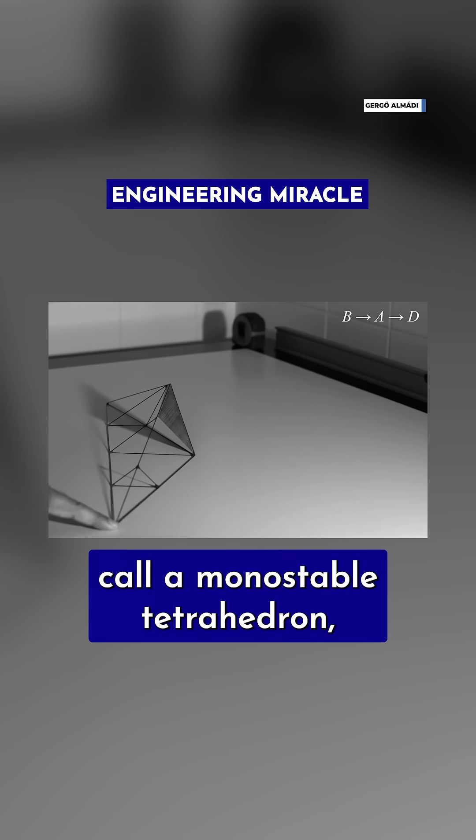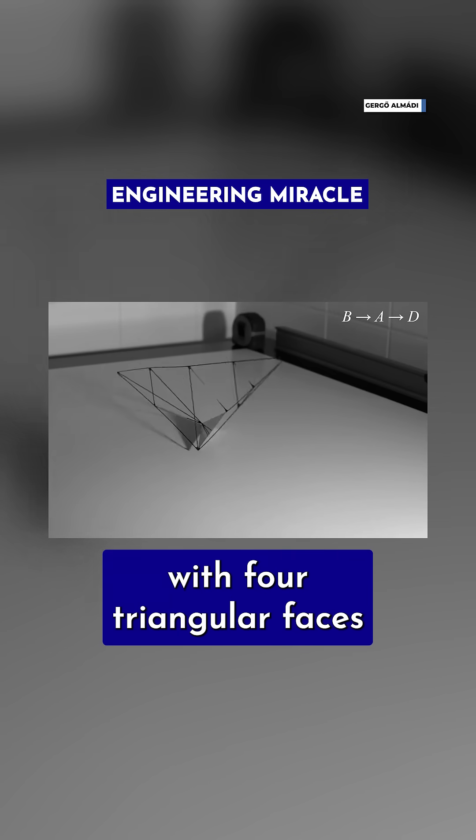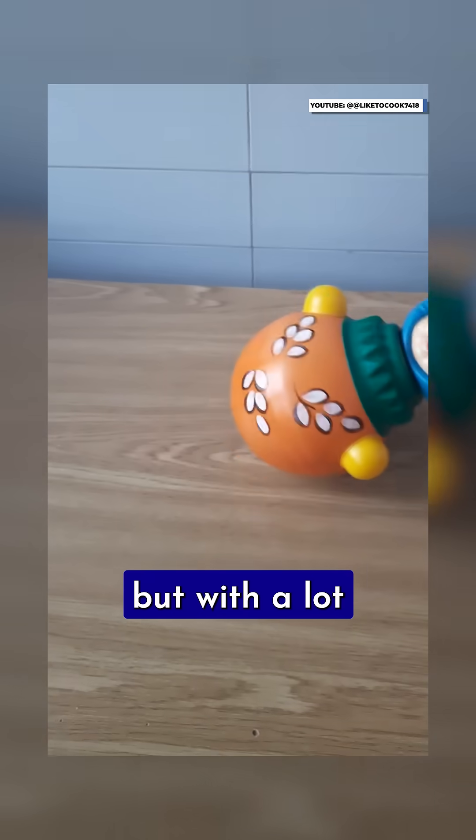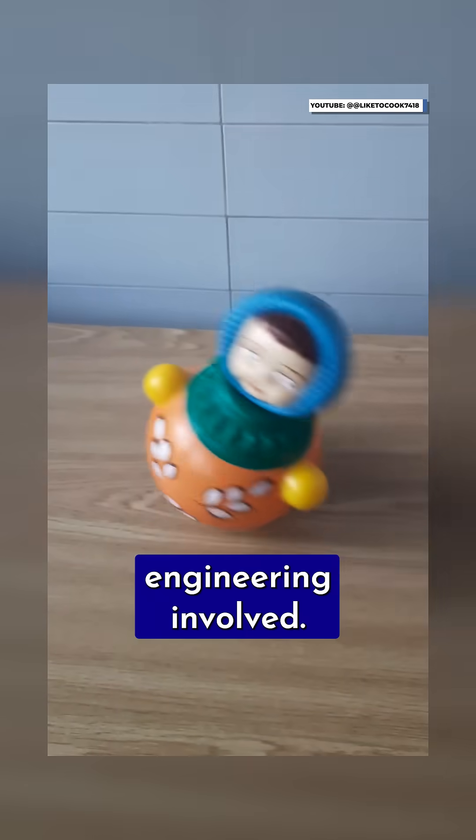Belay is what mathematicians call a monostable tetrahedron, a pyramid-like figure with four triangular faces that has one stable resting position. Think of it like a roly-poly toy, but with a lot more mathematics and top-notch engineering involved.